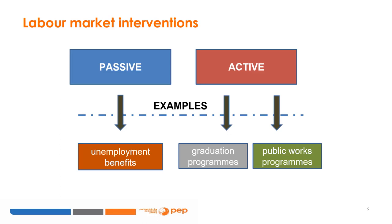In this overview of main objectives for programs across the world, we can see that objectives differ across regions. Employment guarantee is a common objective of public works programs in South Asia, while provision of income after a one-time shock is most prevalent in Latin America and the Caribbean, and in East Asia and the Pacific.